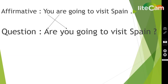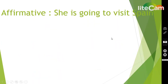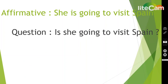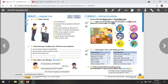And how should I answer? 'Yes, I am' or 'No, I'm not.' Why did I use 'I am' or 'I'm not'? Because I'm asking 'Are you going to visit Spain?' — so the answer is 'Yes, I am' or 'No, I'm not.' Now let's use 'she': 'She's going to visit Spain.' How can I make it a question? 'Is she going to visit Spain?' And the answer is: 'Yes, she is' or 'No, she isn't.'